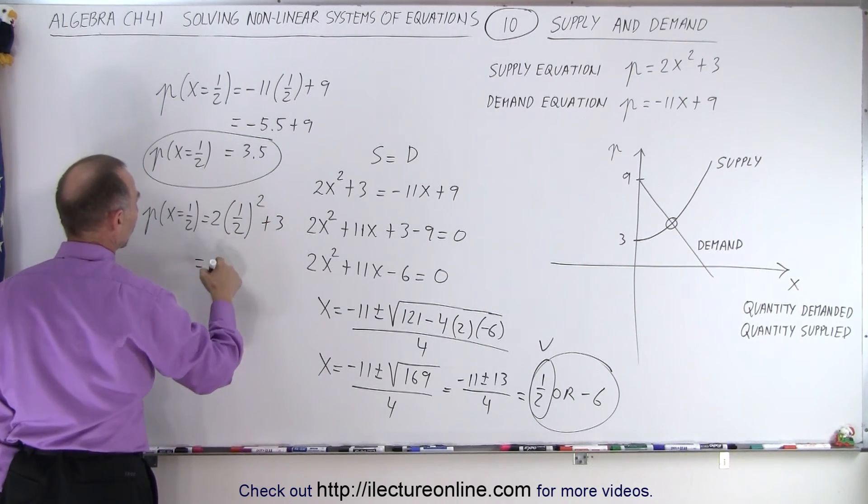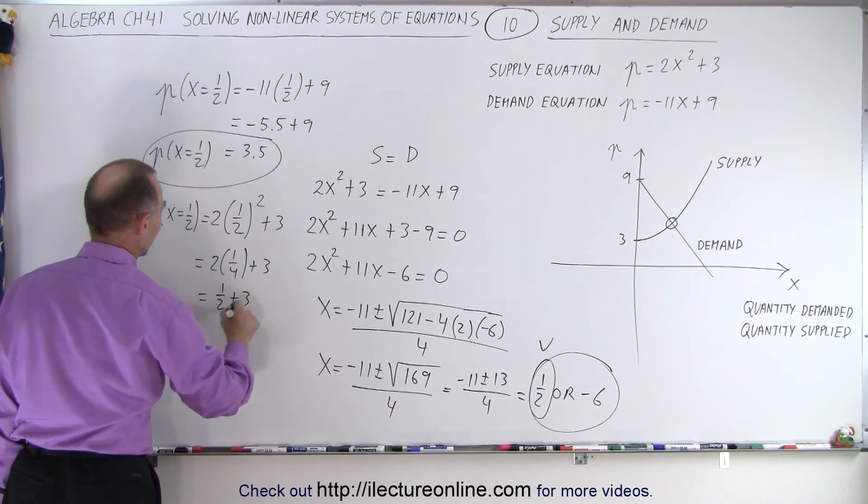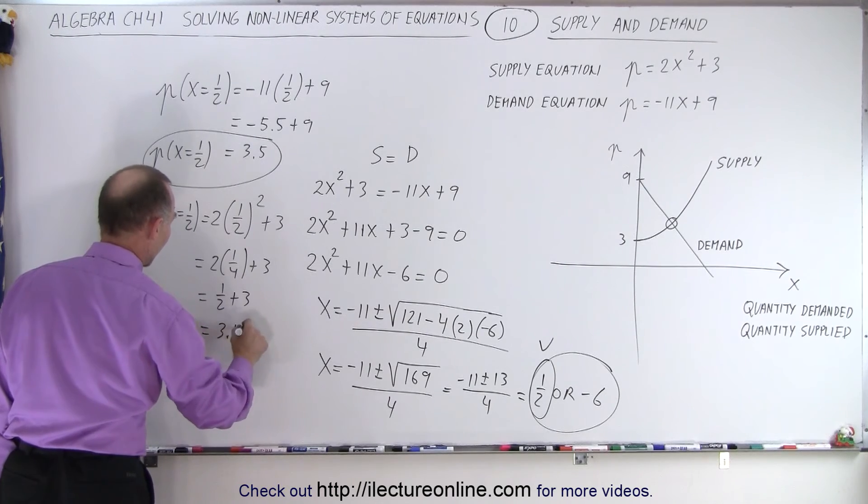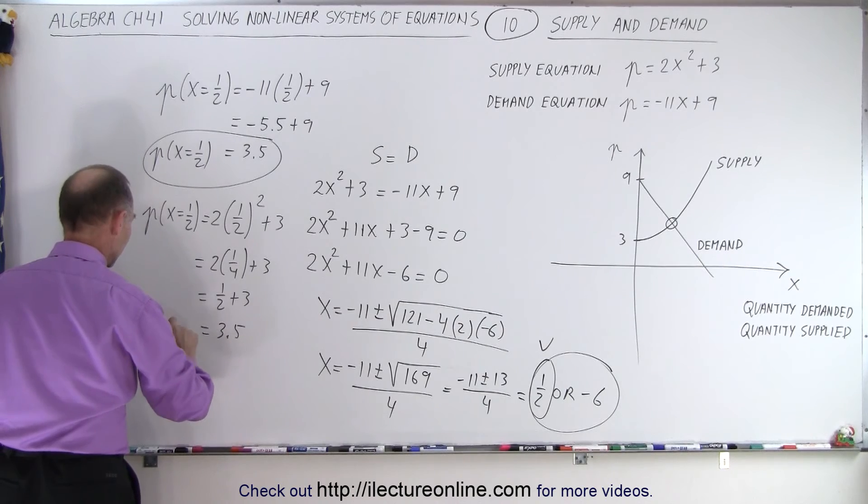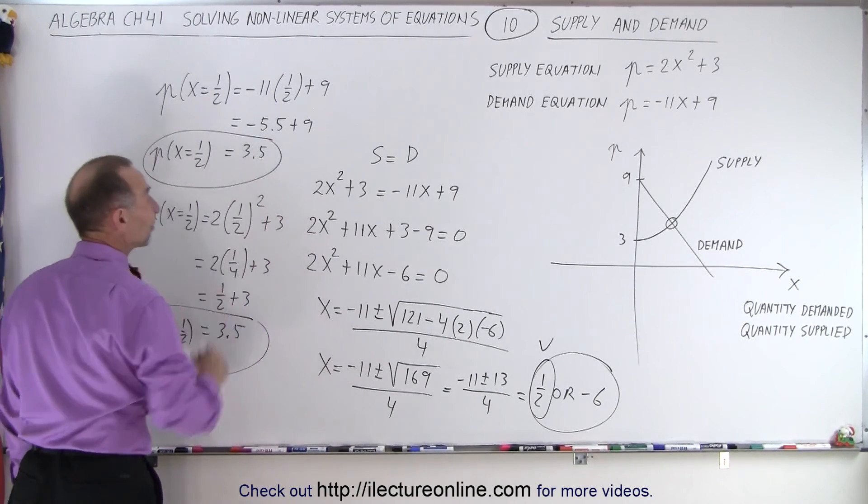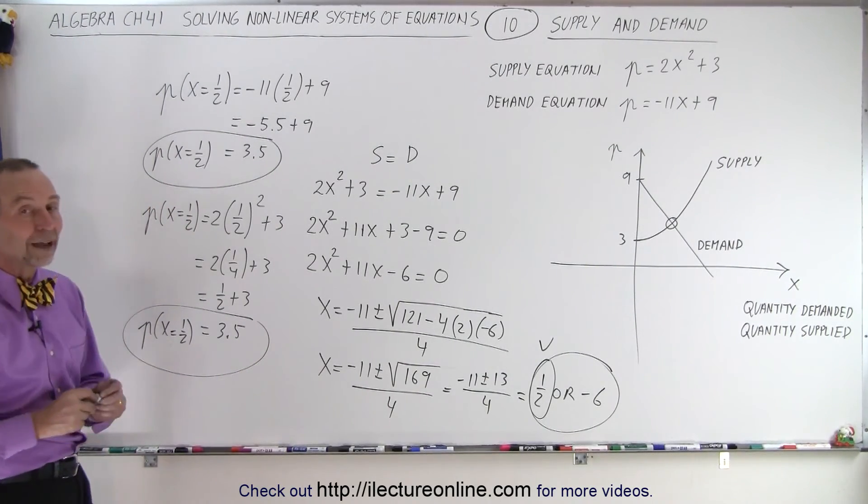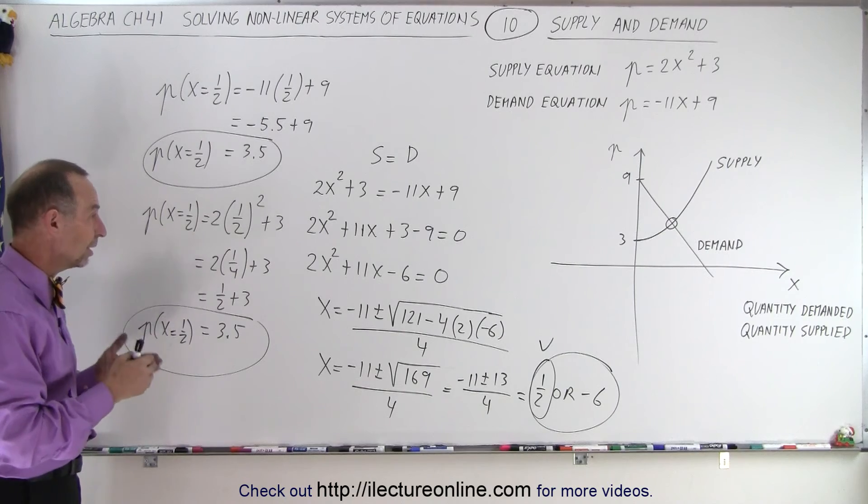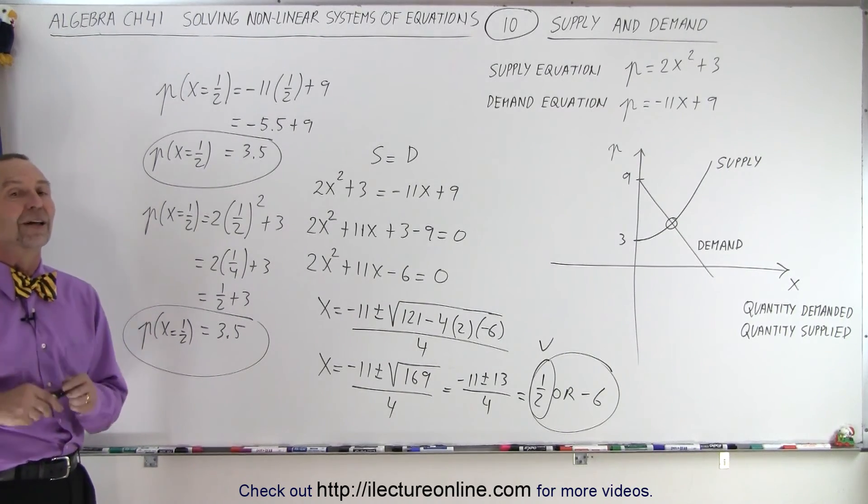Which is 1 quarter times 2, plus 3, which is equal to 1 half, plus 3, which is 3.5. So you can see that we get the very same result when X equals 1 half. We get the very same result for the price in both cases, which tells us we did the problem correctly, and we have found the right answer. When the quantity demanded or the quantity supplied equals 1 half, you get the correct value.